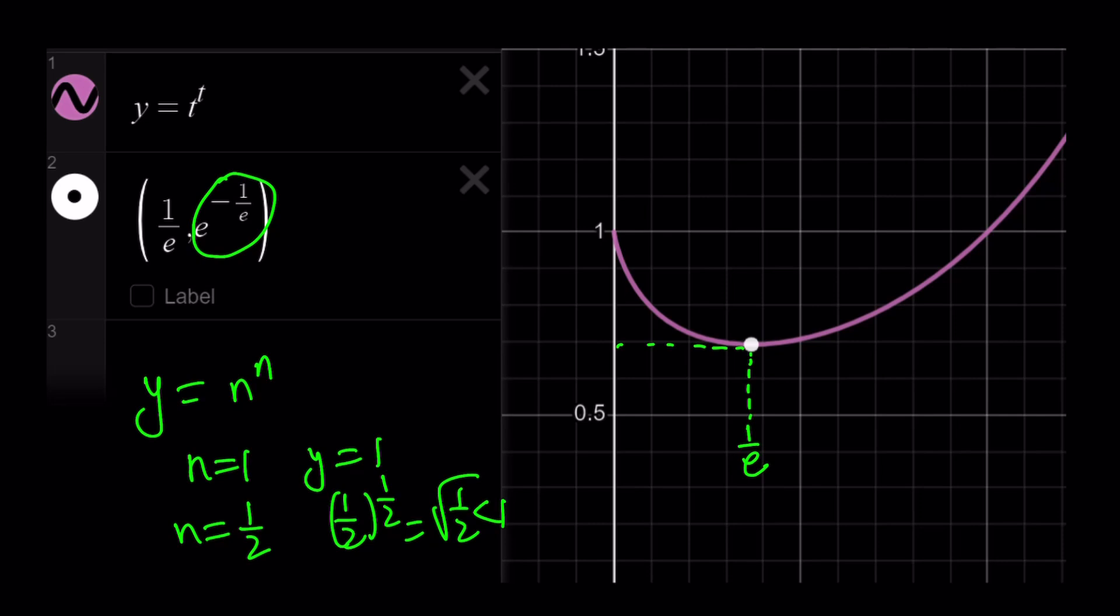If n is less than 1, and of course you can't have n to the n less than this value, so if n is less than 1 over e, then you don't get any solutions. Make sense?